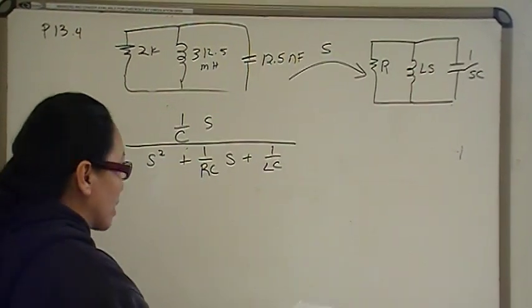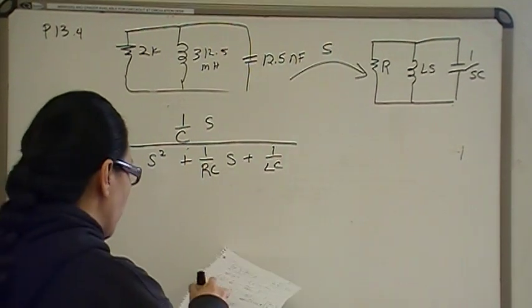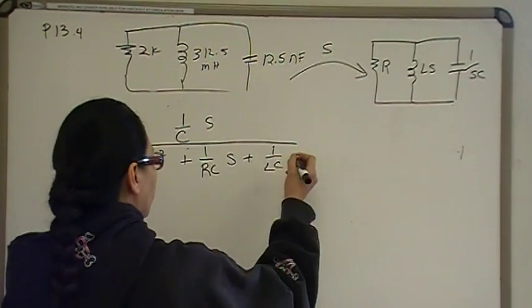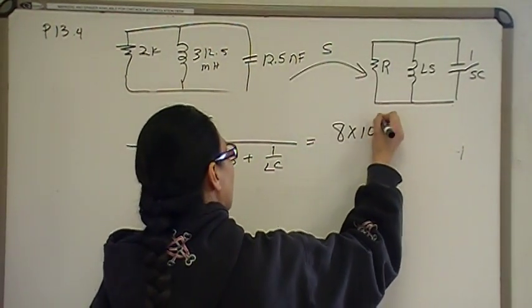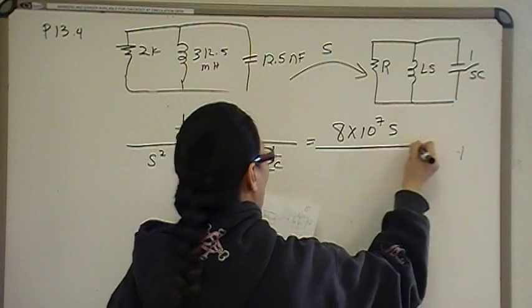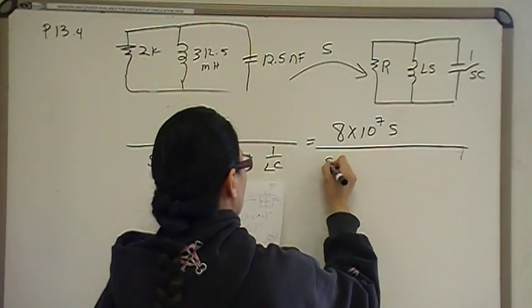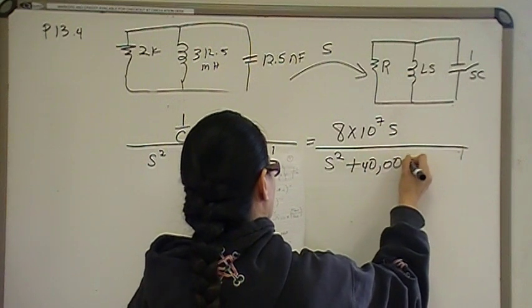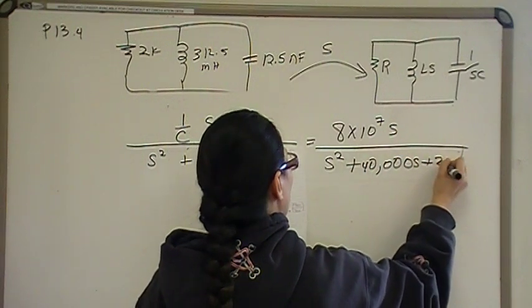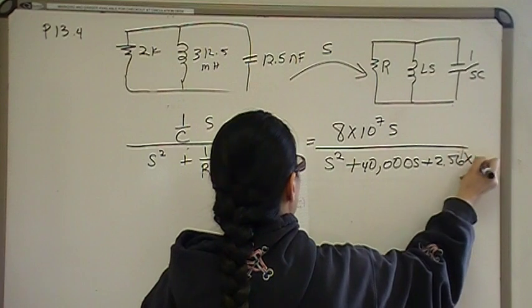So, I'm just going to let you plug in numbers on your own, but this will work out to be 8 times 10 to the 7th S over S squared plus 40,000 S plus 2.56 times 10 to the 8th.